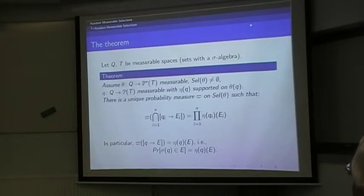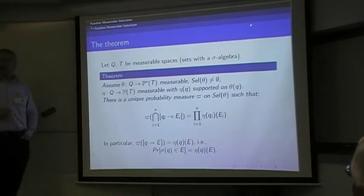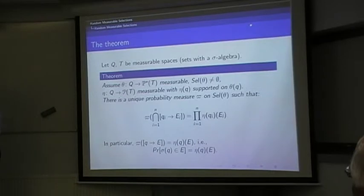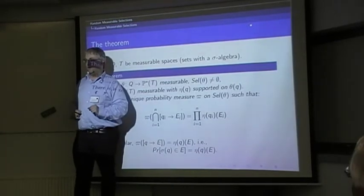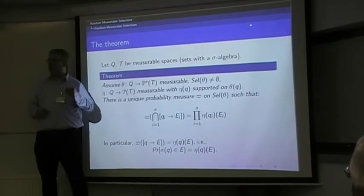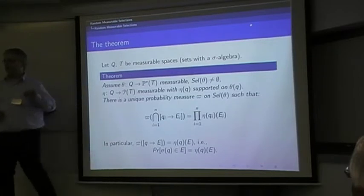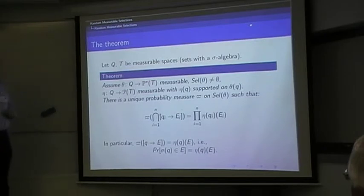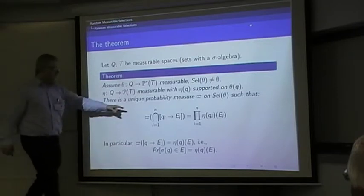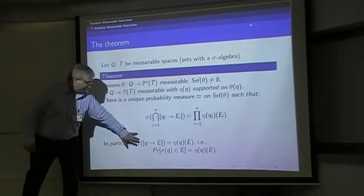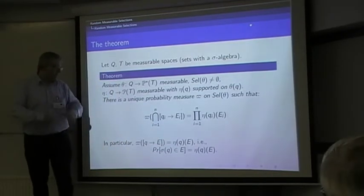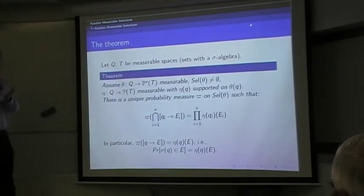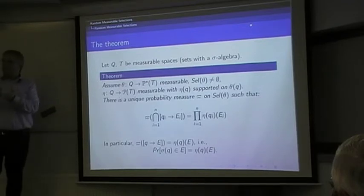This defines the sigma algebra, the least sigma algebra containing these things. Here's the theorem. It says assume you've got a measurable multifunction. You didn't expect it to be arbitrary, did you? So it has to be measurable. It has to have at least one selection. The conclusion is that there's a probability measure on the set of selections. There's no probability measure on an empty set. So it's a pretty minimal assumption. Assume you have a randomized scheduler. Then there's a unique probability measure that satisfies this. For n equals 1, this implies that this fancy thing happens, which in a clearer way means that the probability that sigma of Q, that is that the transition you choose starting from state Q, is in E, is exactly the probability predicted by the randomized scheduler eta.